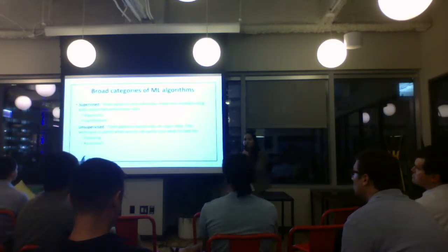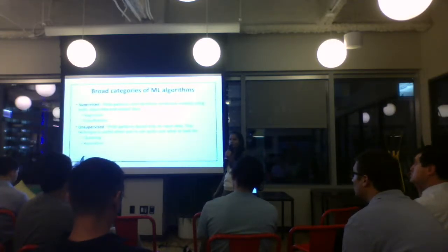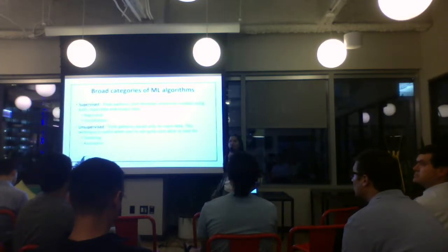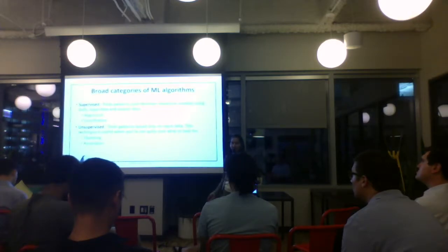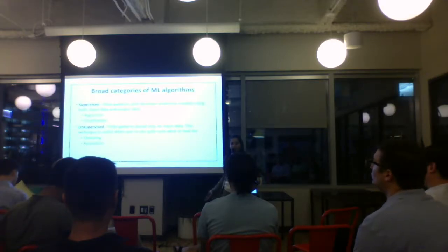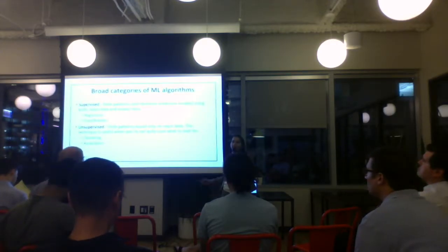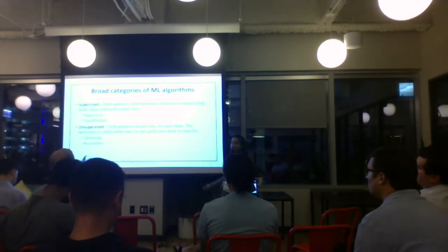The broad categories of machine learning are supervised and unsupervised. In supervised learning, you know the outcome of whatever you are predicting — not at the time of predicting, but later, so you can cross-check whether your prediction is correct. In unsupervised learning, you don't have an output variable, so you don't know what you're predicting — the patterns should reveal themselves.